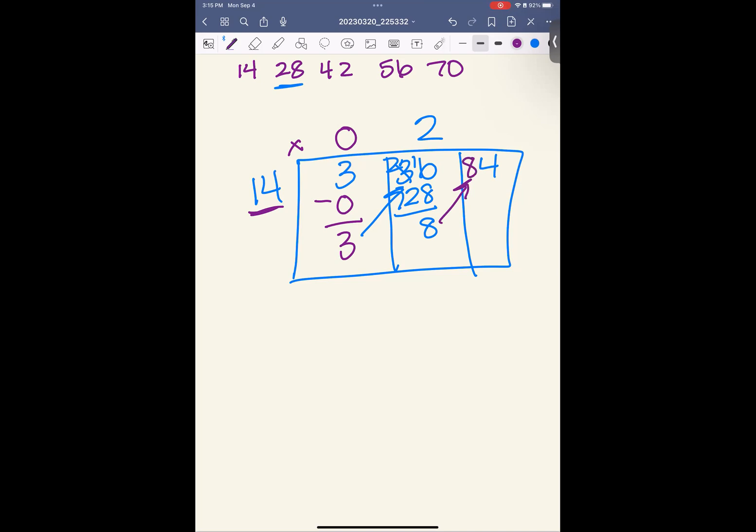Now, here you see we got close, but not close enough. I need to add one more group. And if I have 1, 2, 3, 4, 5, 6 groups of 14, it gives me 84 on the nose. My answer is 26.